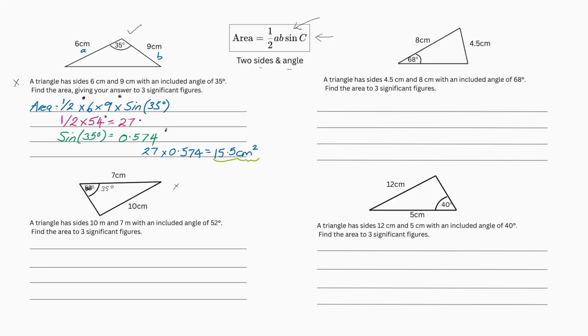So, pop it all into our formula. So we have a half times A and B. It's A and B, but basically it's the sides. Call them whatever you want because it doesn't matter which way you do it because it's a times. So 7 times 10 times sin and our angle, remember to put it in brackets, is 35 degrees.